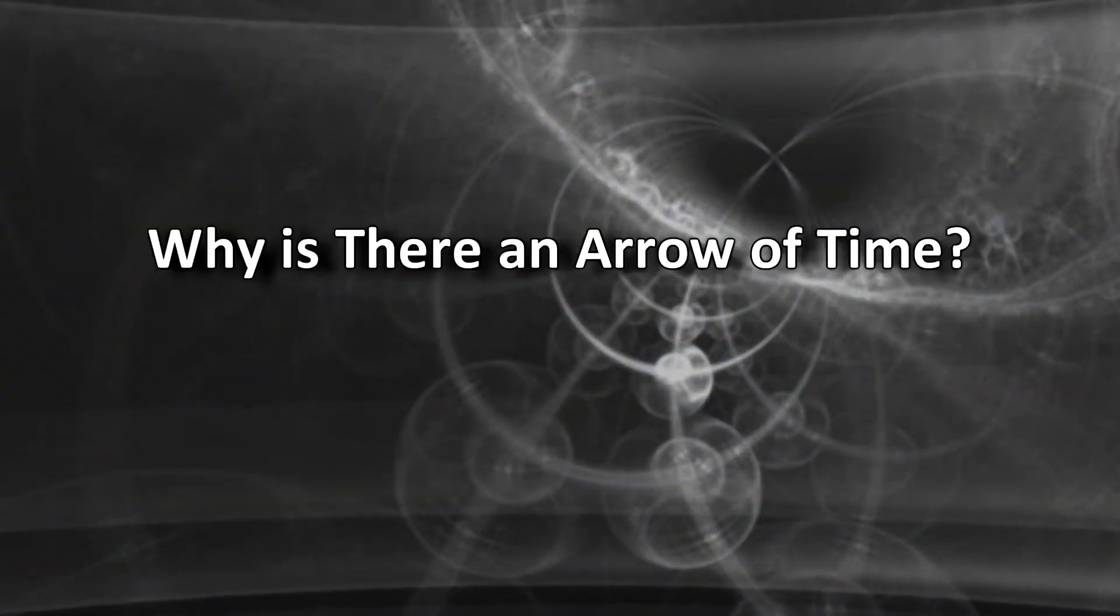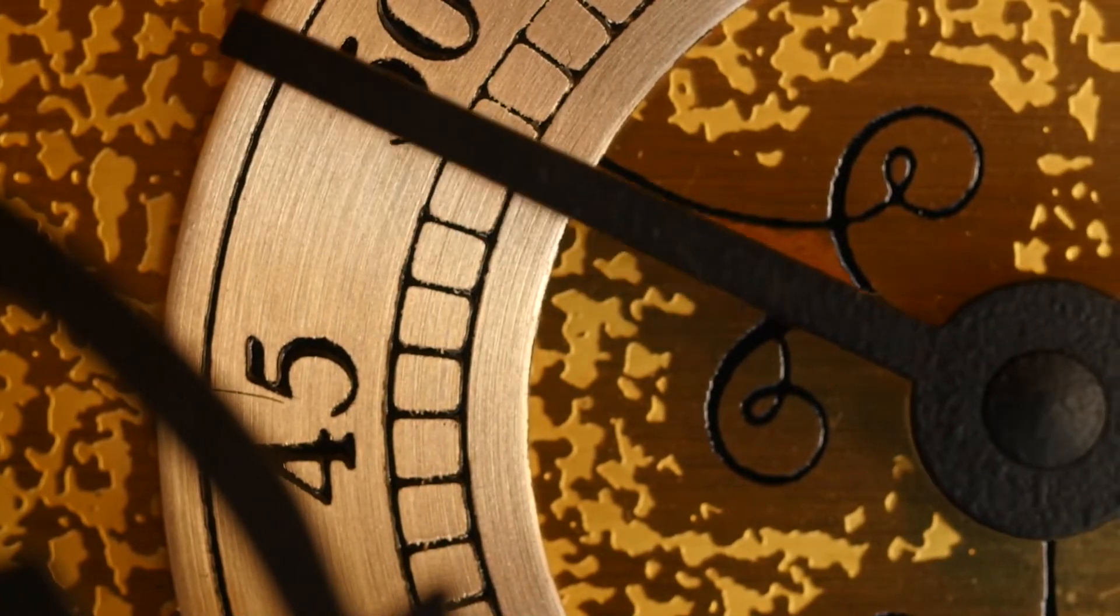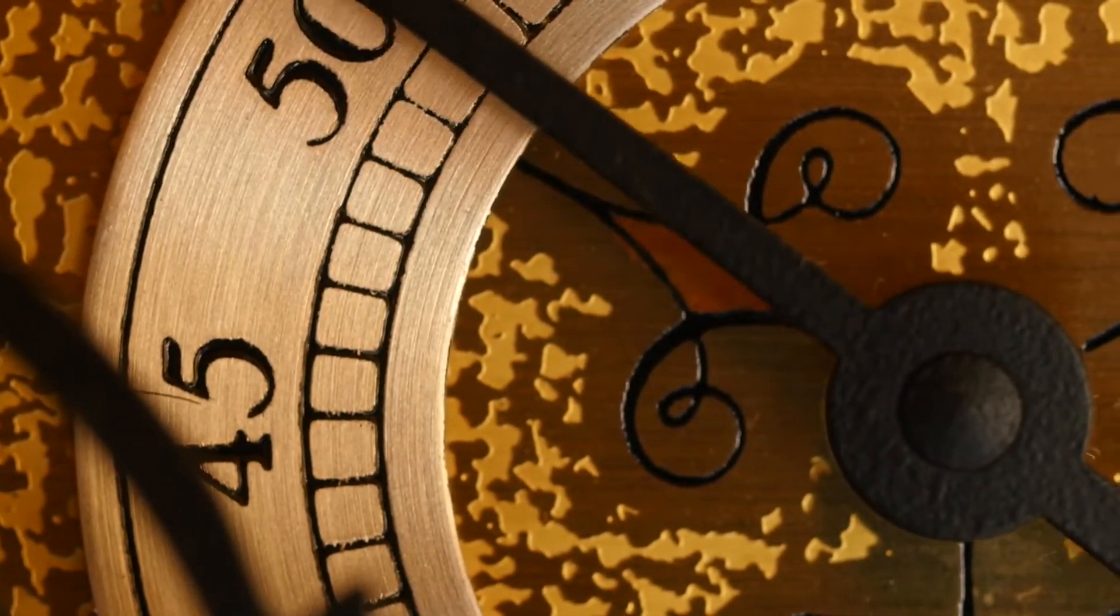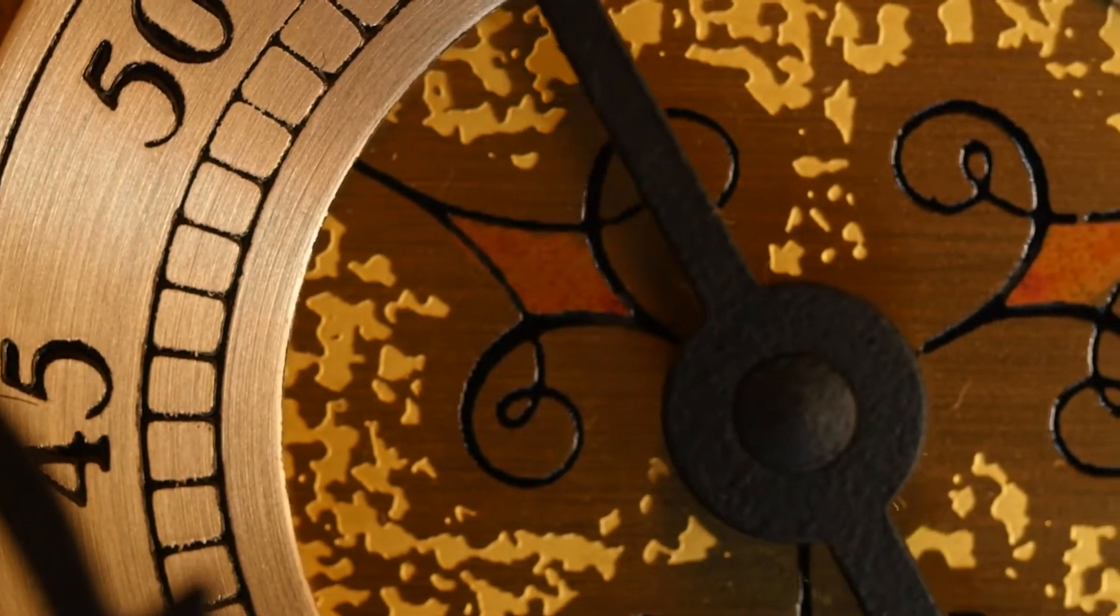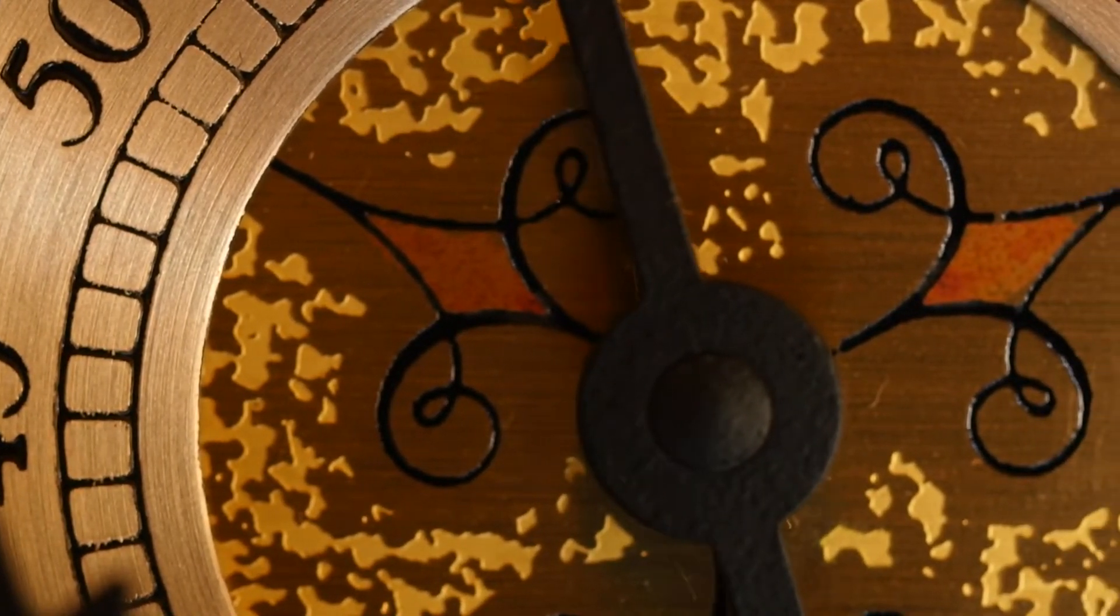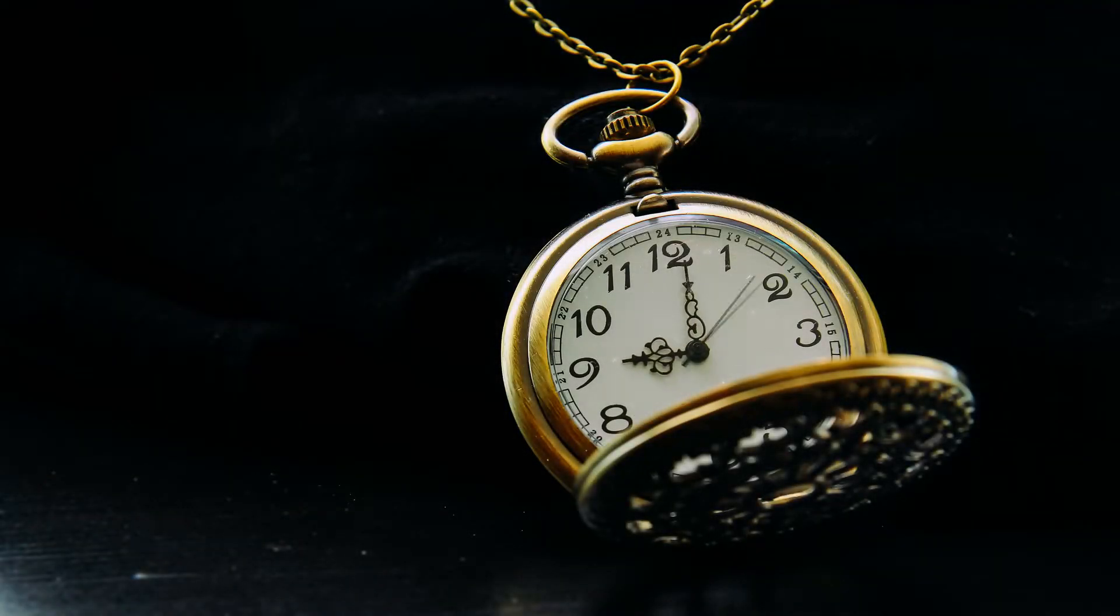Why is there an arrow of time? Entropy enables time to move ahead. The level of disorder always increases, thus it is not possible to reverse an increase in entropy once it has taken place. Ordered arrangements of particles are fewer than disordered ones, which makes entropy logical.